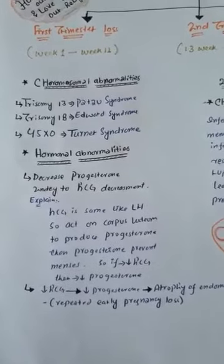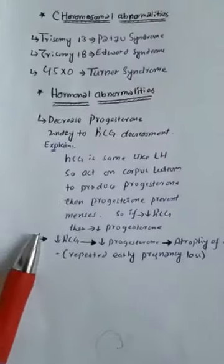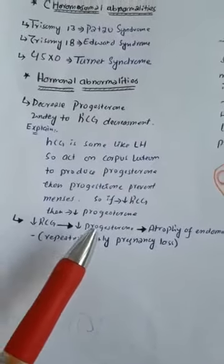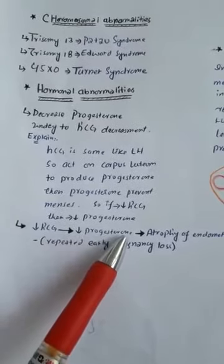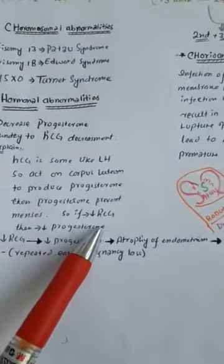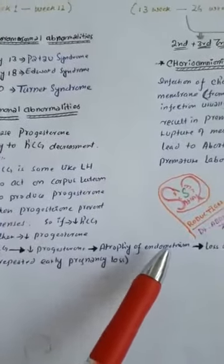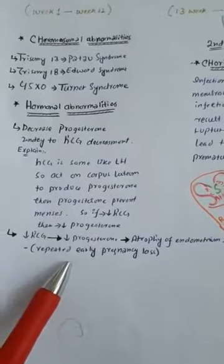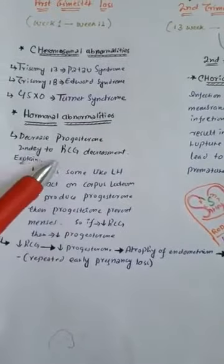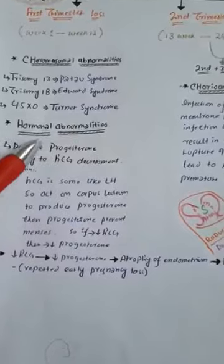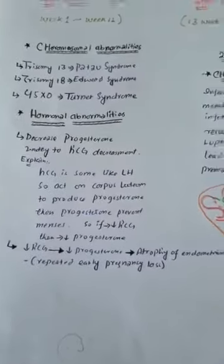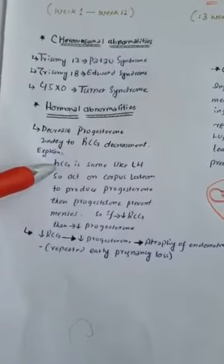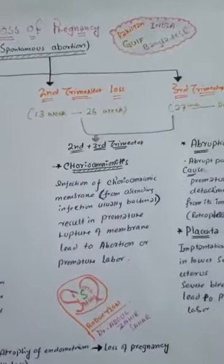Progesterone prevents menses and keeps the pregnancy going. If HCG is decreased, there will be a decrease in progesterone, and atrophy of the endometrium will occur, leading to loss of pregnancy. This is called early pregnancy loss due to hormonal abnormalities. HCG is actually produced six to eight days after fertilization.